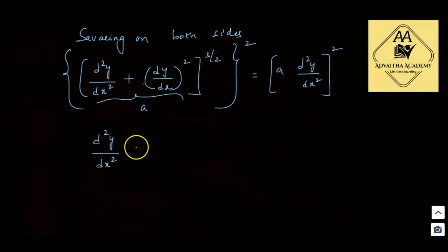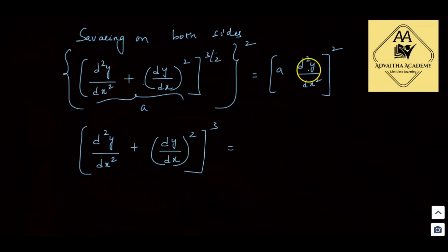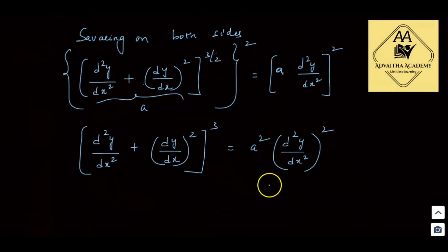After squaring both sides, the left-hand side becomes [d²y/dx² + (dy/dx)²]³, and the right-hand side becomes a² · (d²y/dx²)².